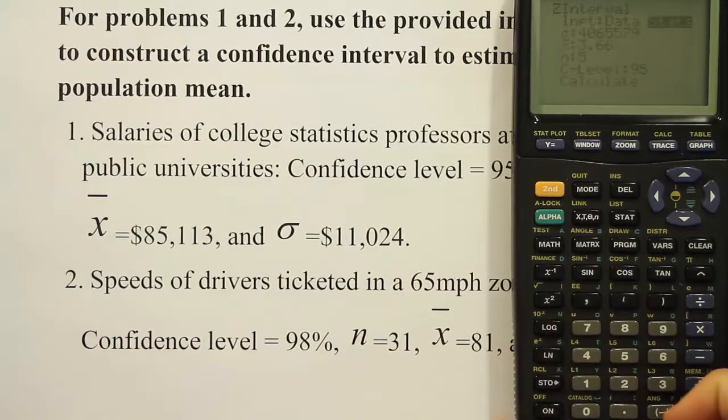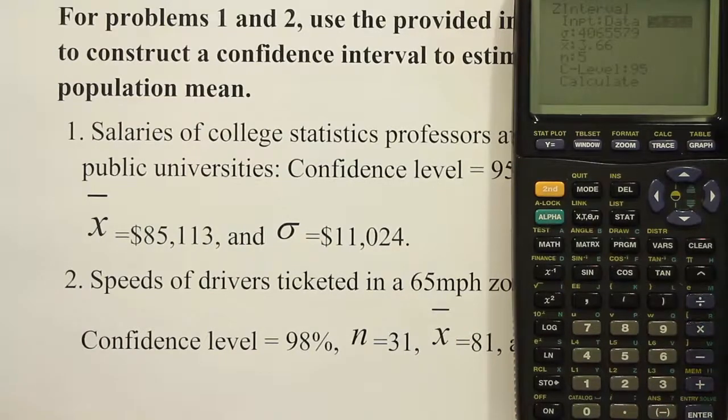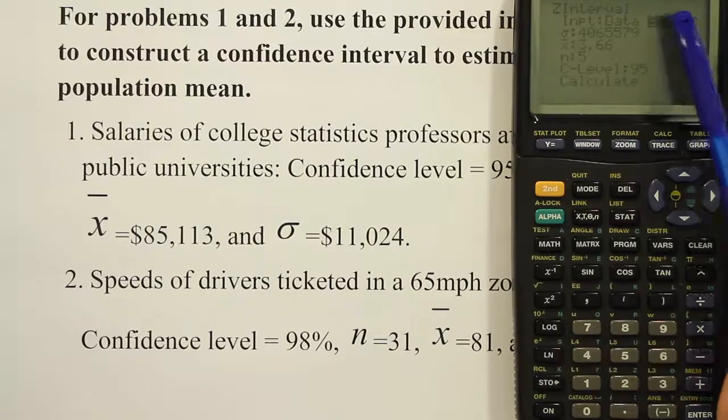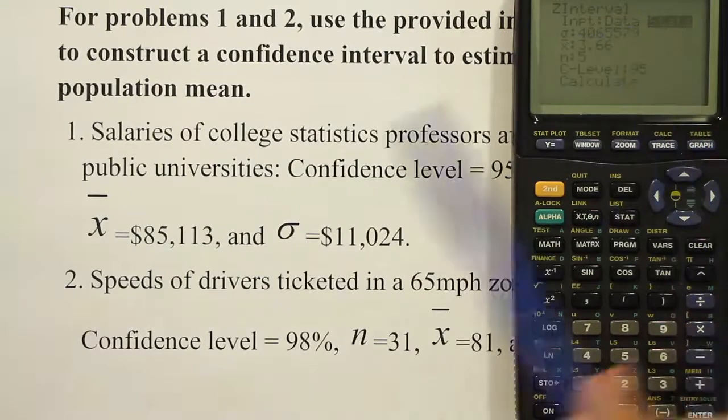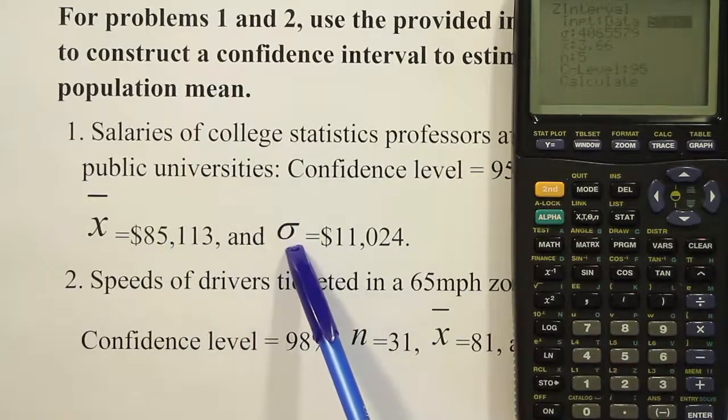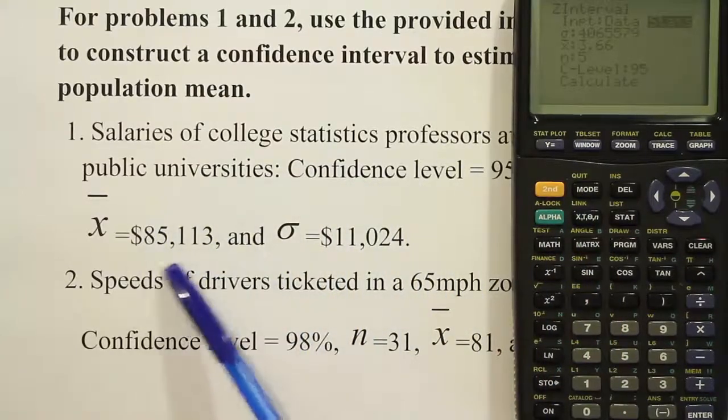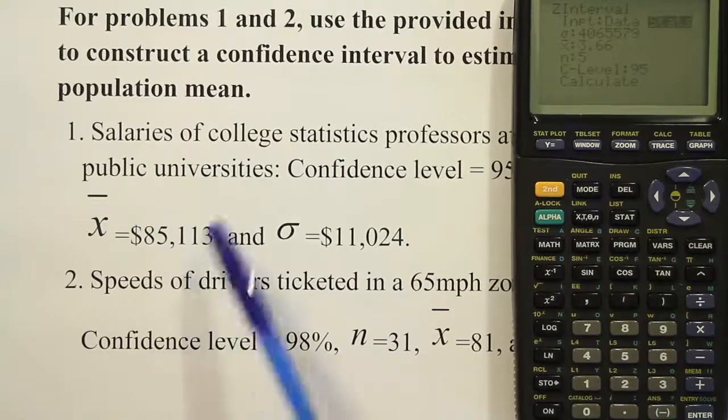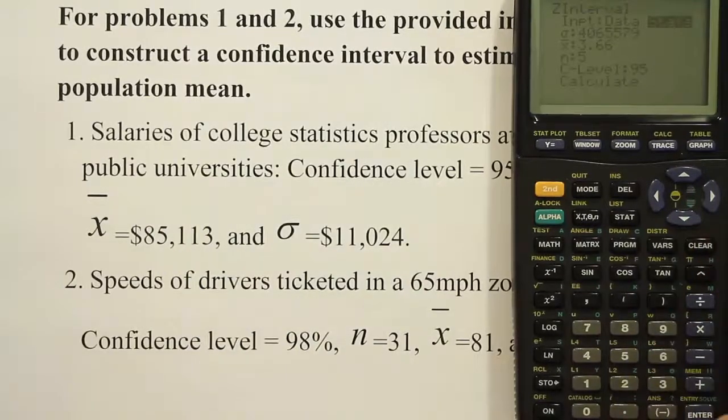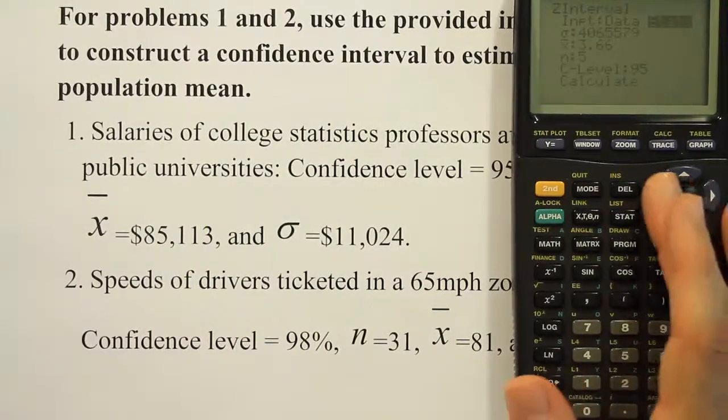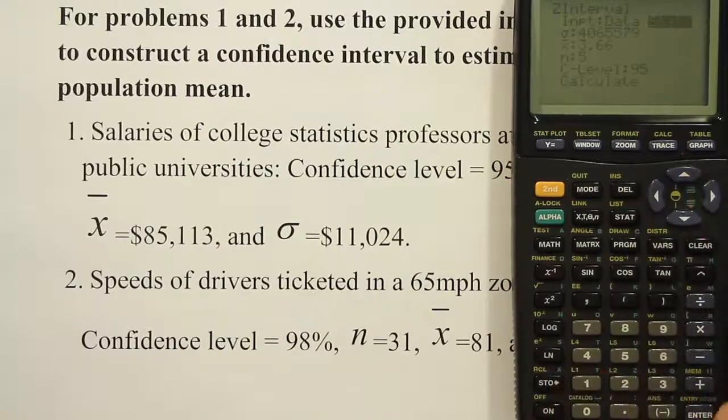When we get in there it's going to ask us what we want to work with. Are we working with summary statistics or are we working with actual raw data? So these are summary statistics. We don't have all the individual values. In other words, we don't have the 36 data values that were used to come up with the sample mean. We just have the sample mean. So in that case we should be in stats. If stats isn't highlighted, you're going to arrow your cursor over to it and hit enter to highlight it.